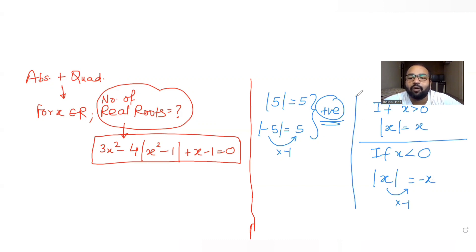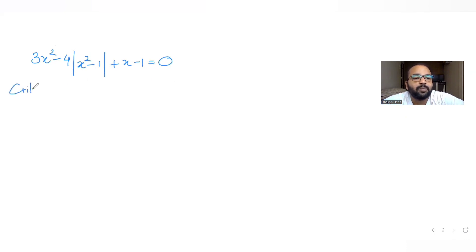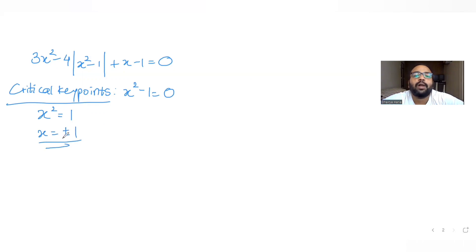This is the idea we will be following here. So for the equation 3x² - 4|x² - 1| + x - 1 = 0, using the critical key points method: the first thing you do is equate the expression inside the mod to zero. So x² - 1 = 0 gives x² = 1, which means x = ±1. We get two values of x.